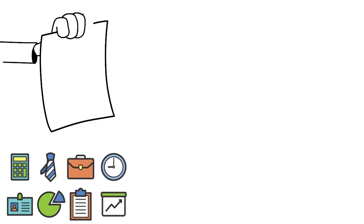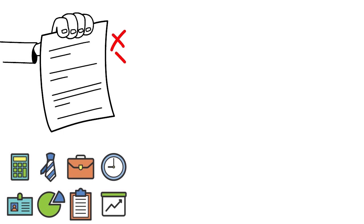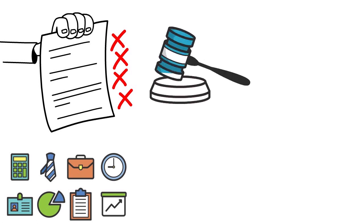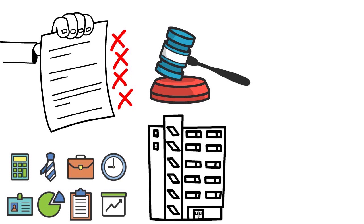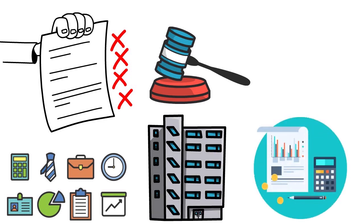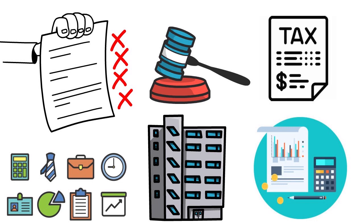An NOL is a deferred tax asset which basically increases the value of the company. Net operating losses can generally be used to offset a company's tax payments in other tax periods through an IRS tax provision called a loss carry forward. This offers a benefit in that it can reduce a company's future tax liability by offsetting taxable income in future years. The purpose is to allow some form of tax relief when a company loses money in a tax period.